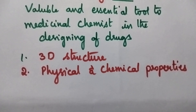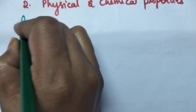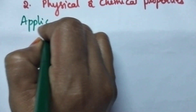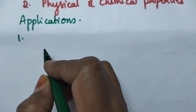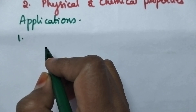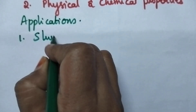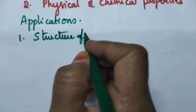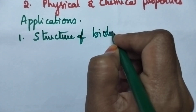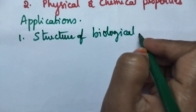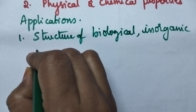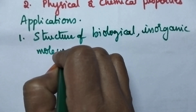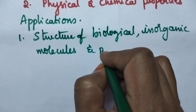Coming to the important applications of molecular modeling: one of the most important applications is that it is possible to know the structure of biological, inorganic molecules and polymers.